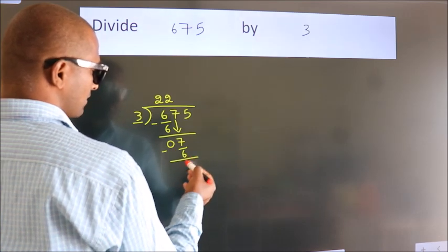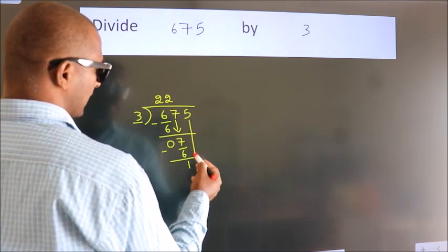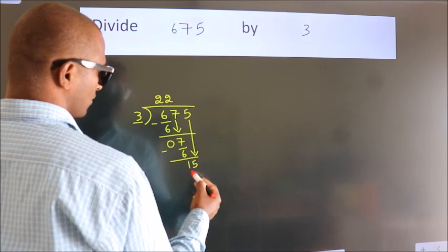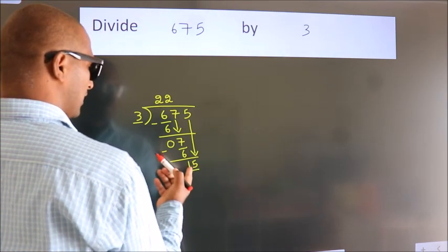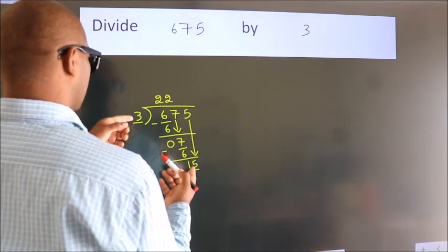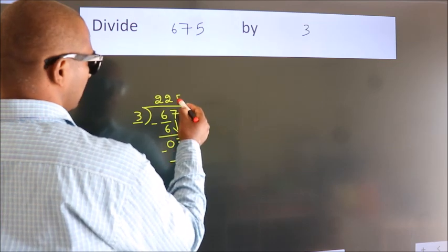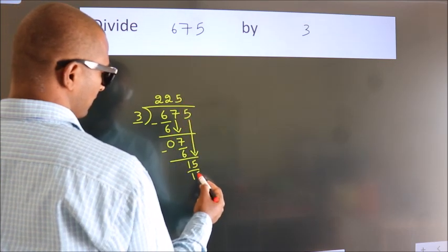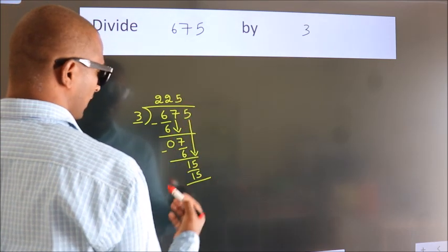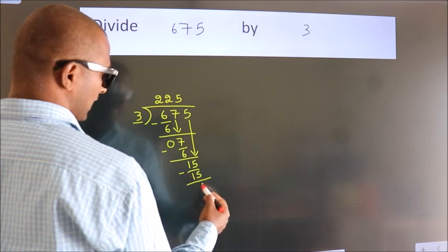After this, bring down the beside number. So, 5 down, making 15. When do we get 15 in 3 table? 3 times 5 is 15. Now we subtract. We get 0.